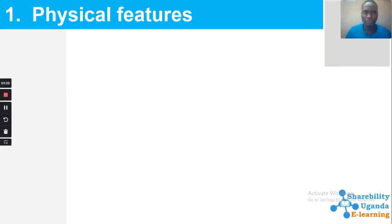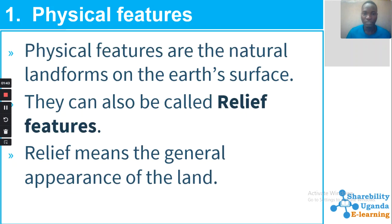Physical features — what are physical features? Angela tells me physical features are things found on the earth's surface. She has a small idea, but physical features are natural landforms of the earth's surface. They can also be called relief features. Relief means the general appearance of the land. Relief is the same as topography, because topography means the surface of the earth.